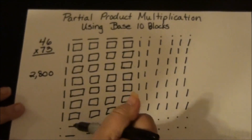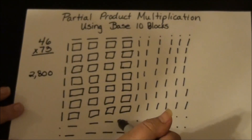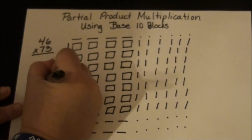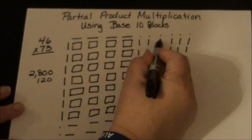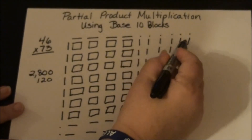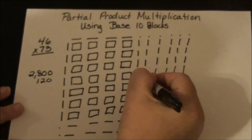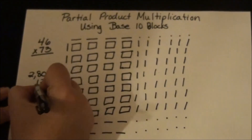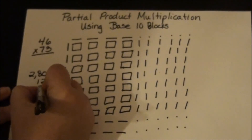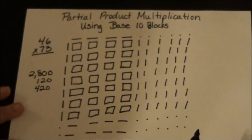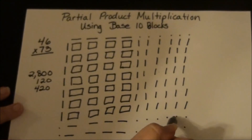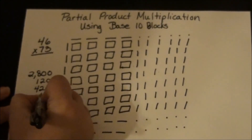For my 10s, I have 3 times 4, which is 12 — so 12 tens, which is 120. And then 6 times 7 is 42, so that's 420. And then I have 3 times 6, which is 18.